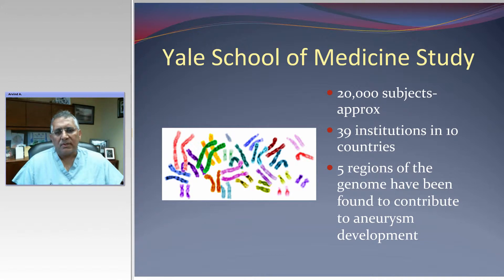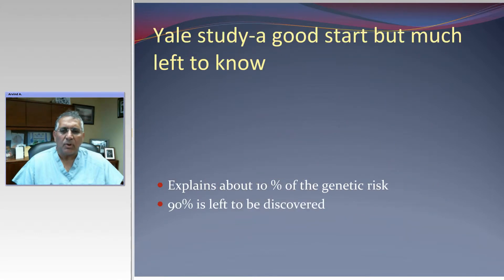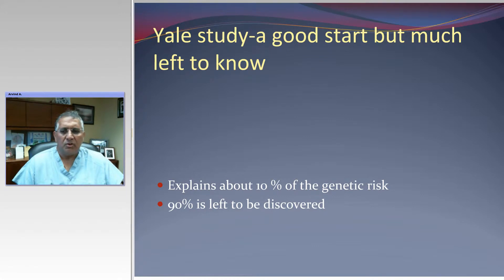A Yale School of Medicine study looked at 20,000 patients across 39 institutions in 10 countries. They found that five regions in the genome contribute to aneurysm development. This explains about 10% of the genetic risk for having an aneurysm, but 90% is still undiscovered — raising the question of whether there are other genomic or idiopathic factors involved.